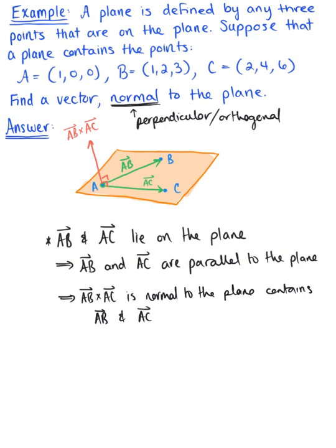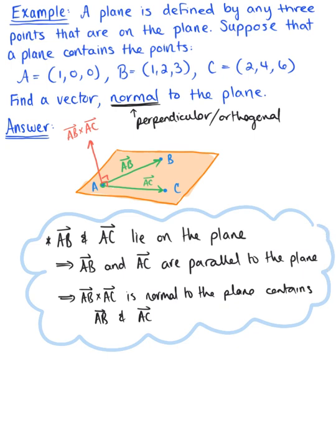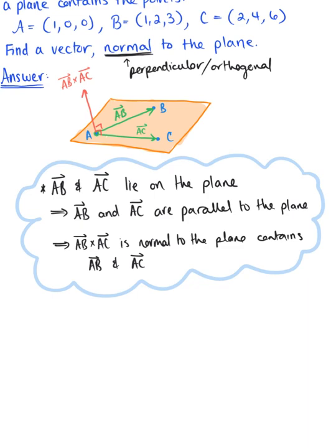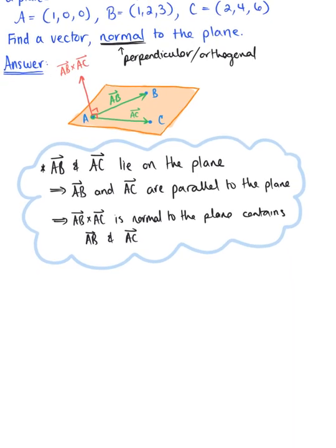We are going to use this now to help us in finding a vector normal to this plane containing points A, B and C. Let's go ahead and simply use the same vectors that we have defined in our illustration above. The first thing that we need to do is find these vectors. We need vector AB and we also need vector AC. Here we go. Vector AB: